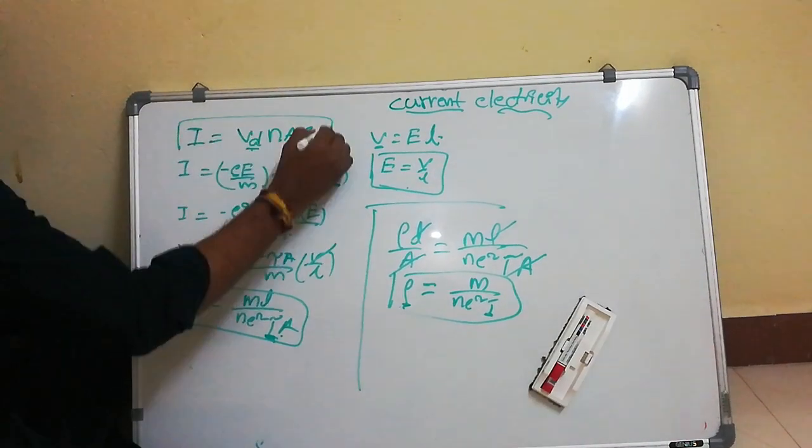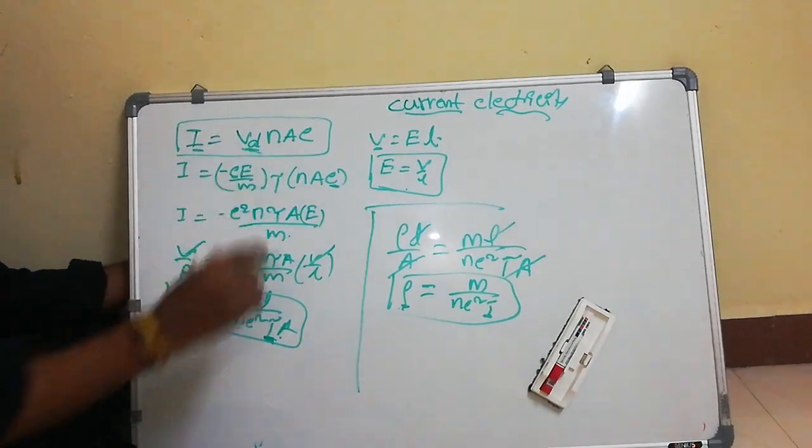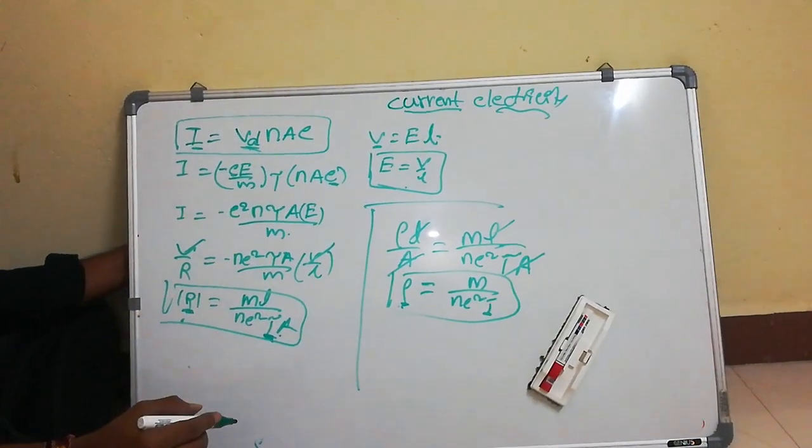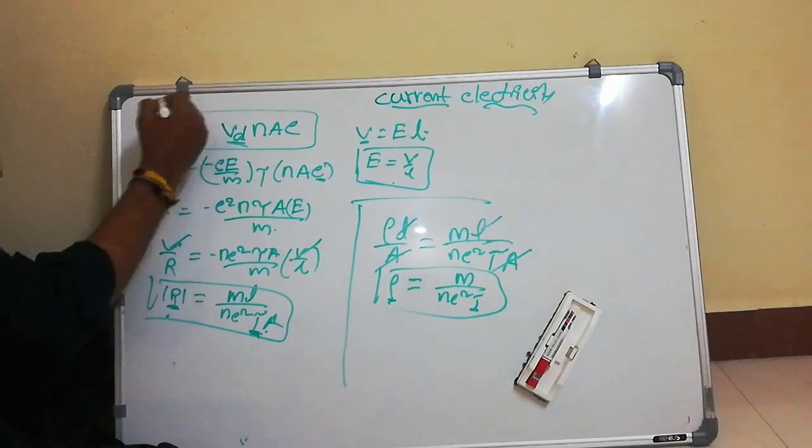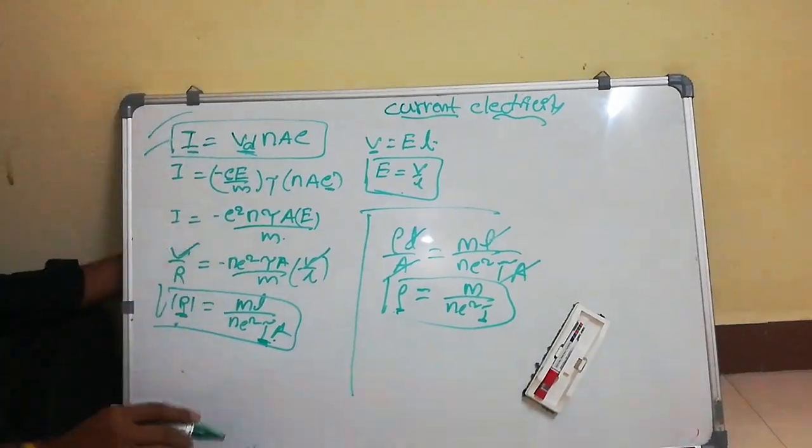To summarize: the relation between current and drift velocity is I = nAeVd. The relation between resistance and relaxation time is R = mL/(ne²τA). The relation between resistivity and relaxation time is ρ = m/(ne²τ). These are the very very important and easiest concepts. Thank you.